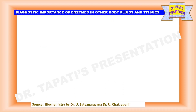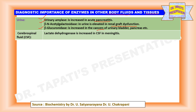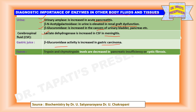Now, let us know the diagnostic importance of enzymes in other body fluids and tissues other than serum. First, urine sample: urinary amylase is increased in acute pancreatitis; beta-N-acetylgalactosidase activity is increased in renal graft dysfunction; beta-glucuronidase activity is increased in cancers of urinary bladder and pancreas. Lactate dehydrogenase is increased in cerebrospinal fluid in meningitis. Beta-glucuronidase activity is increased in gastric carcinoma. In feces, trypsin and chymotrypsin levels are decreased in pancreatic insufficiency and cystic fibrosis.